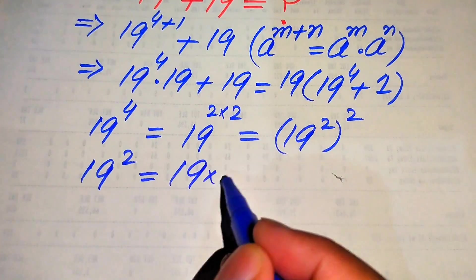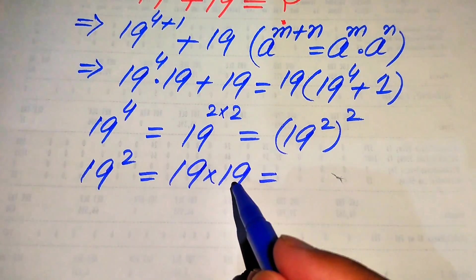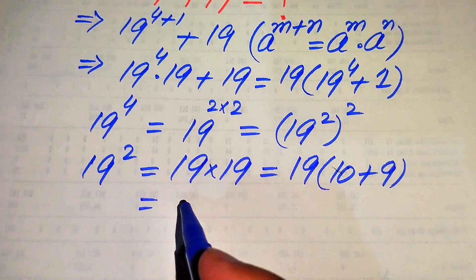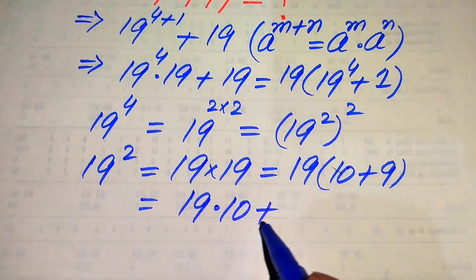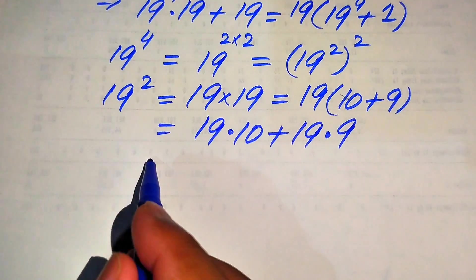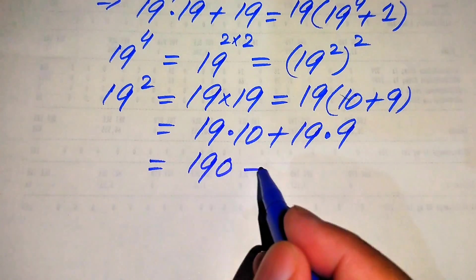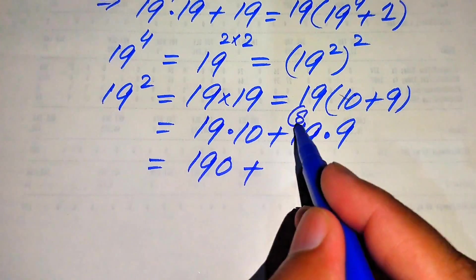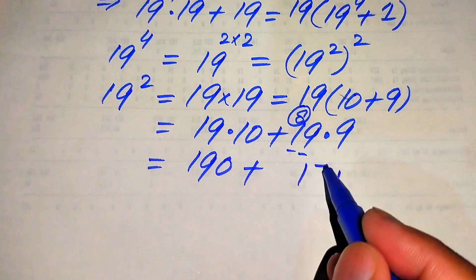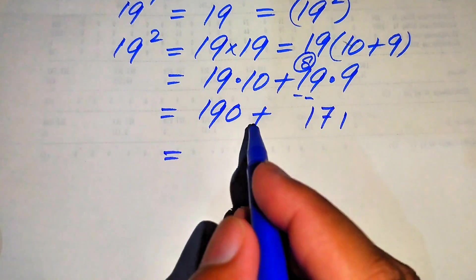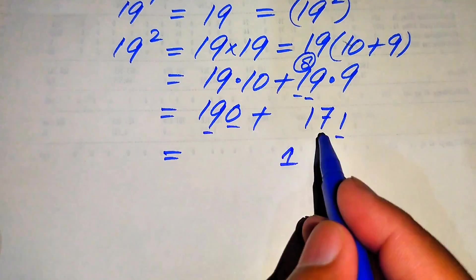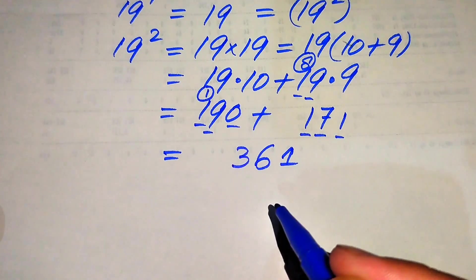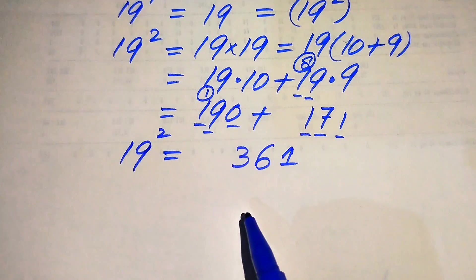19 squared equals 19 multiplied by 19. We break 19 as 10 plus 9 and distribute: 19 times 10 plus 19 times 9. That gives 190, and for 19 times 9: 9 nines are 81, write 1 carry 8; 9 ones are 9, plus 8 is 17. Adding 190 plus 171: 0 plus 1 is 1, 9 plus 7 is 16 write 6 carry 1, 1 plus 1 plus 1 is 3. So 19 squared equals 361.